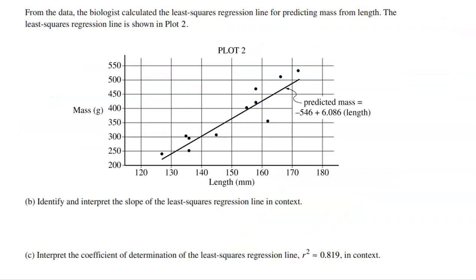The next section says, from the data, the biologist calculated the least squares regression line. That's our line of best fit, right? Our perfect line used for predicting mass from length. So you take the x, that's the length, and you make a prediction for the mass. The least squares regression line is shown in plot two, and it's also given right here. Now remember, in statistics, we have a least squares regression line that is of the form a plus bx. So keep that in mind. We typically put the x, the variable, at the end, which is what they did right here, length.